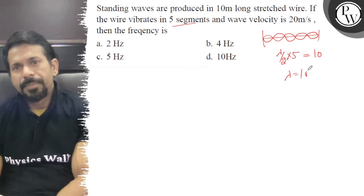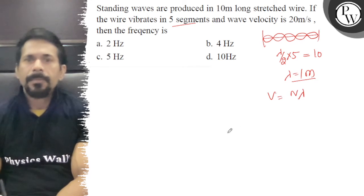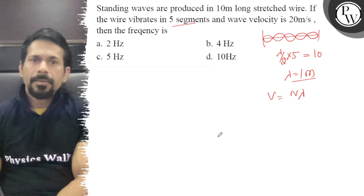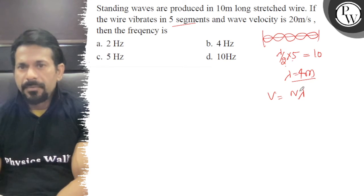So lambda equals 4 meters, and v equals n lambda, where n is the frequency. Lambda is 4, and v equals n times 4.